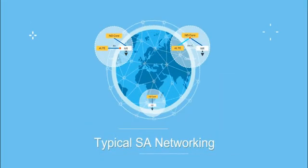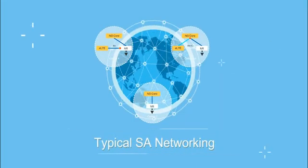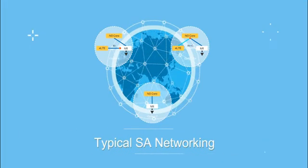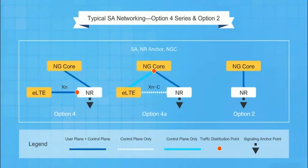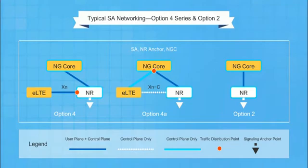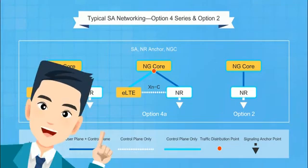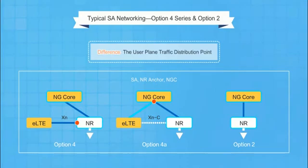Let's take a look at a typical SA network. SA networking includes the Option 4 and Option 2 series. The Option 4 series includes Option 4 and Option 4A. Once again, these options are almost the same — in each one, the core network is an NGC, the wireless network is NR, and the signalling plane is anchored on the NR side. There are small differences between the options, mainly in how the user plane data is distributed.